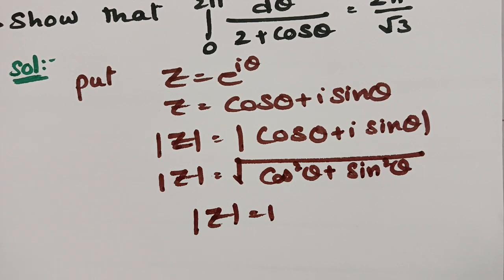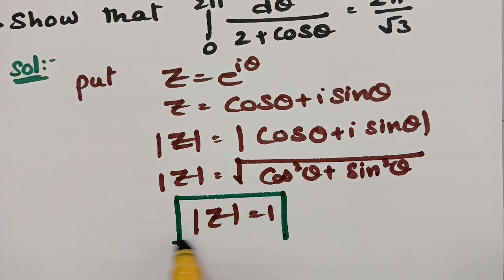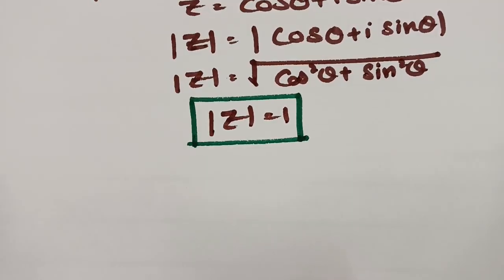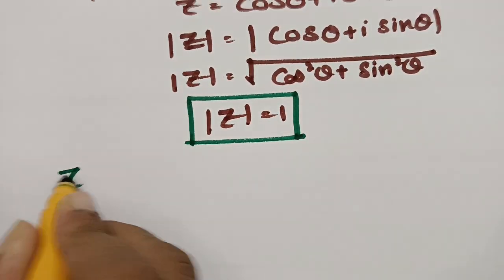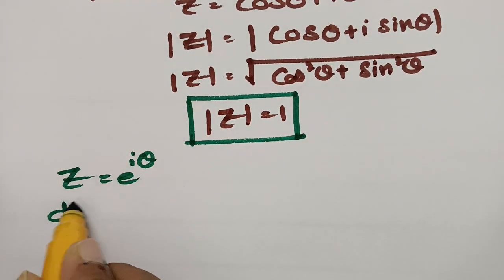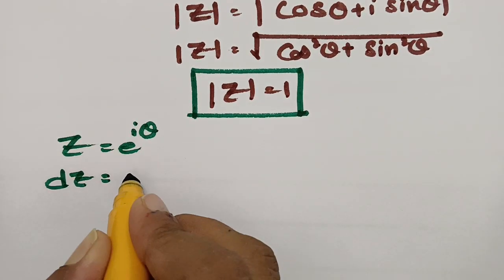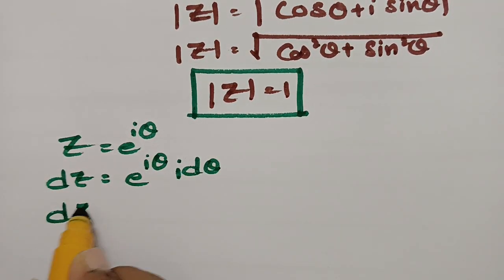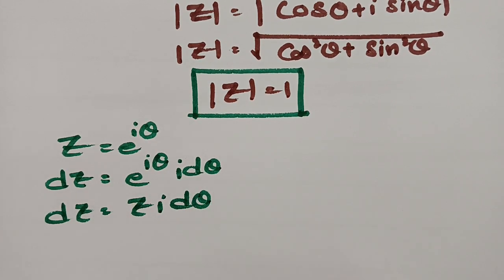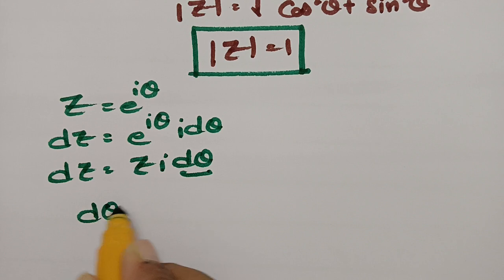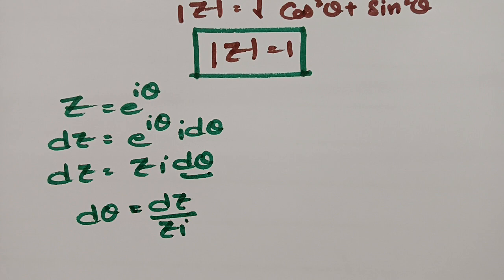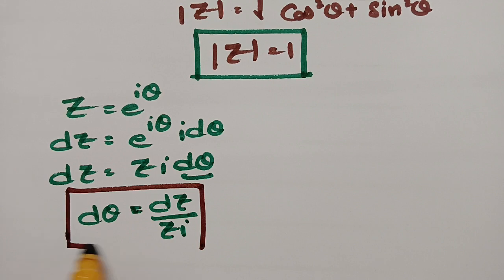So the region is a circle with center 0 and radius 1. Next we need dθ. Since z = e^(iθ), differentiating both sides gives dz = e^(iθ) · i · dθ = z · i · dθ, so dθ = dz / (z·i).